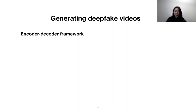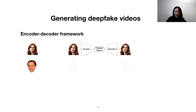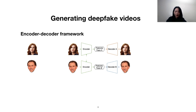Let me give you an example. Let's say we want to swap Nicolas Cage's face onto Amy Adams' face. The first step is to gather several face images for both Nicolas and Amy. The second step is to train two autoencoders separately, one for Nicolas and one for Amy. However, both of these autoencoders employ a shared encoder. This ensures that the latent representation output from the encoder disentangles expression from identity.